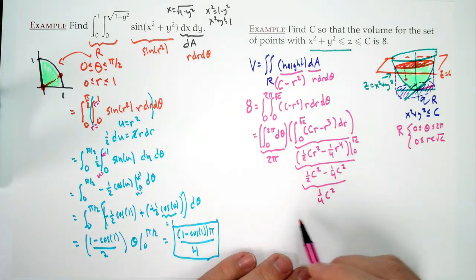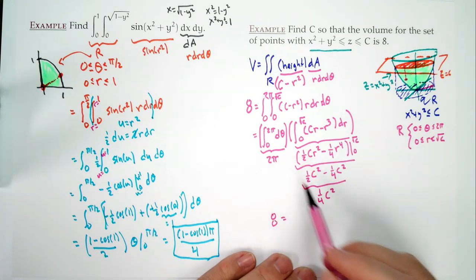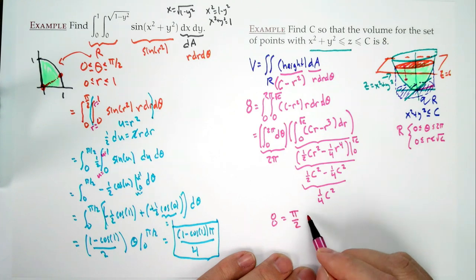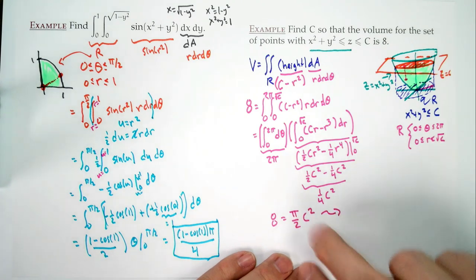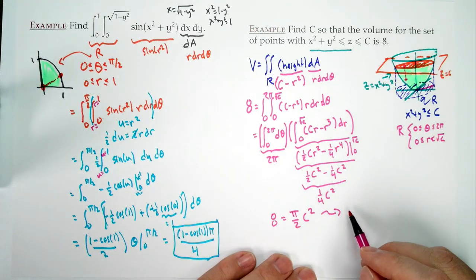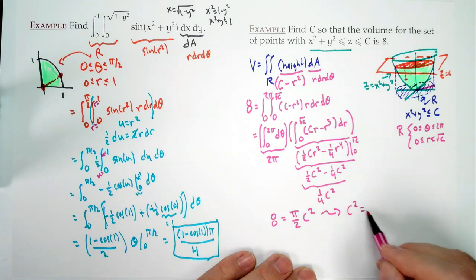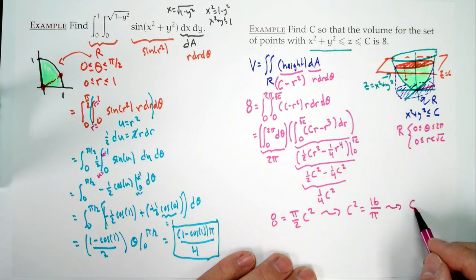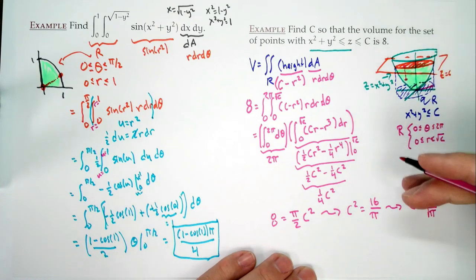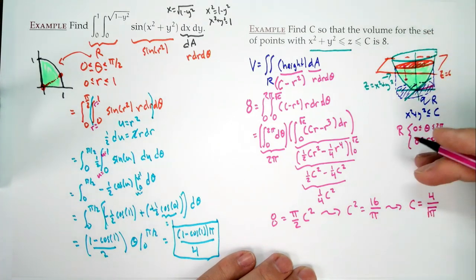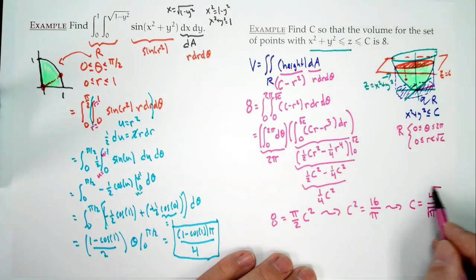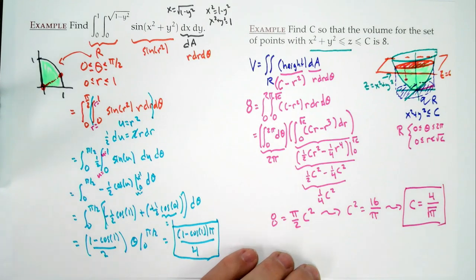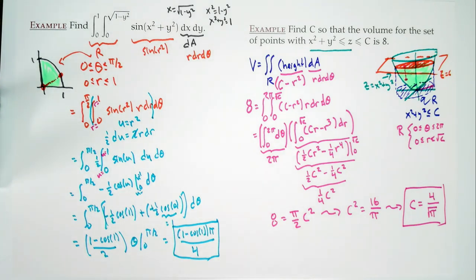Setting the volume equal to 8: 8 = ½πC², so C² = 16/π. Taking the positive square root: C = 4/√π. We need C positive — if C were negative, no points would satisfy the inequality. So C = 4/√π is our answer.